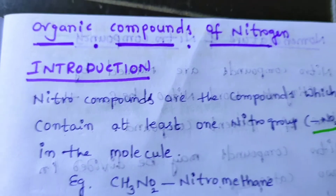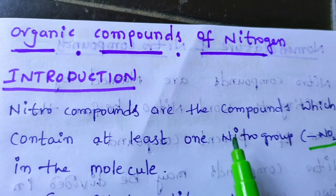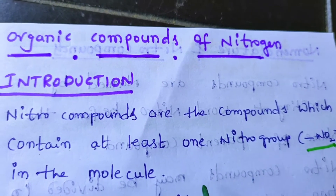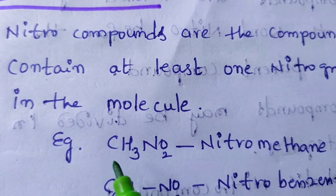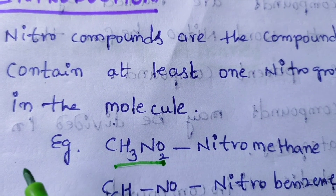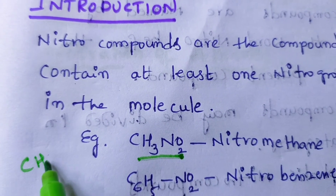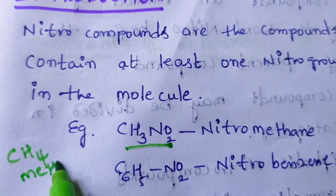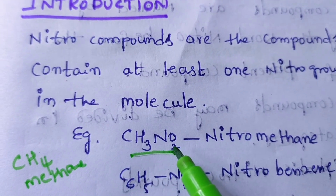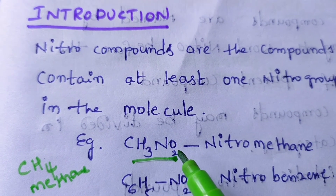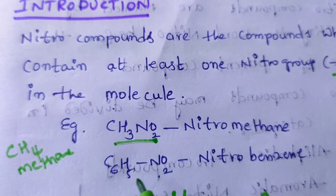So, see here, nitro compounds are the compounds which contain at least one nitro group, that is NO₂, in the molecule. For example, CH₃NO₂. In CH₄, which is methane, one of the hydrogens is replaced with NO₂. So this is the example — nitromethane. Another example is nitrobenzene.